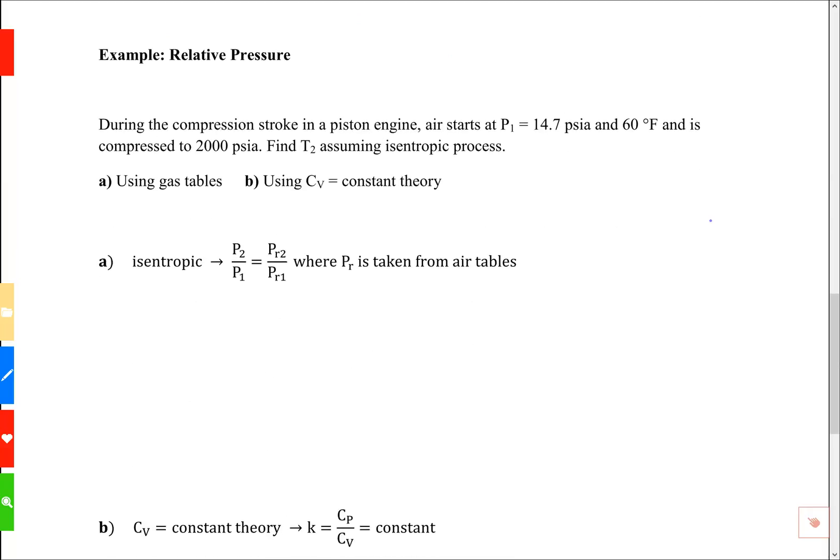In this example we're asked to look at the compression stroke in a piston engine with air starting at 1 atmosphere and 60 Fahrenheit and it's going to be compressed to 2,000 pounds per square inch absolute. We have to find the final temperature assuming the process is isentropic using the gas tables and using Cv equals constant theory.